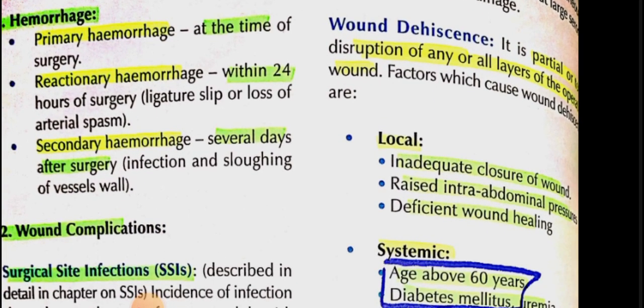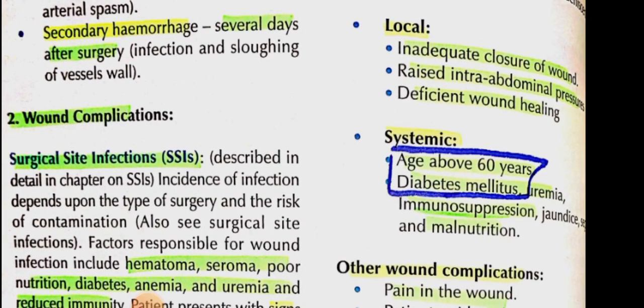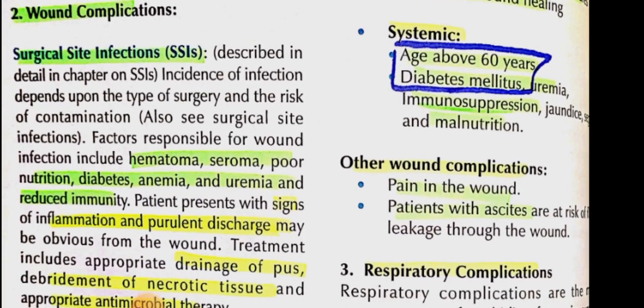Wound dehiscence means the wound has opened — a partial or total disruption of any or all layers of the operative wound. Local factors include inadequate closure, raised intra-abdominal pressure, and deficient wound healing. Systemic factors include advanced age, diabetes, uremia, immunosuppression, jaundice, sepsis, and malnutrition. Complications include pain and fluid leakage from the wound, especially in patients with ascites.